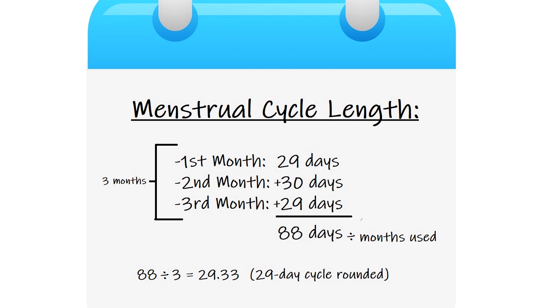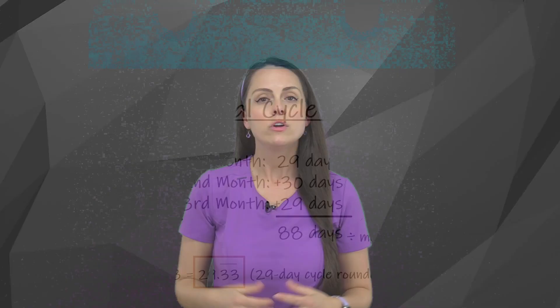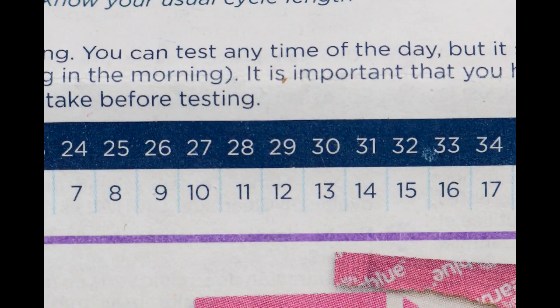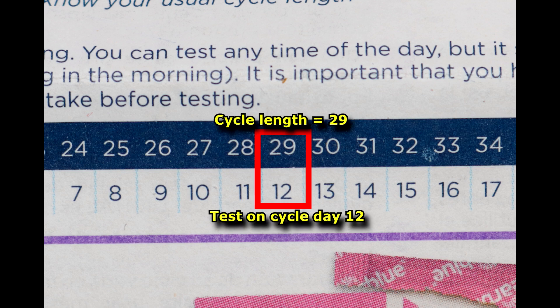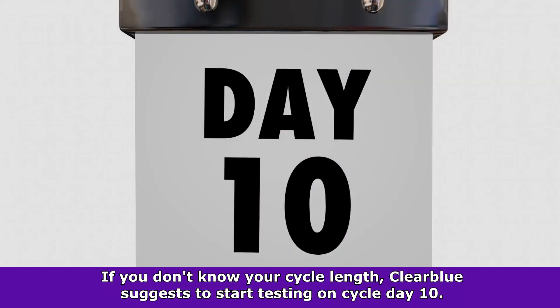If you need more information on calculating your menstrual cycle length, I have a video that can help you do that. Once you know your cycle length, your ovulation test kit will have a chart to tell you which cycle day you need to start testing. For example, if your cycle was 29 days long, you'd want to start testing on cycle day 12. If you don't know your cycle length, Clear Blue actually recommends starting on cycle day 10.